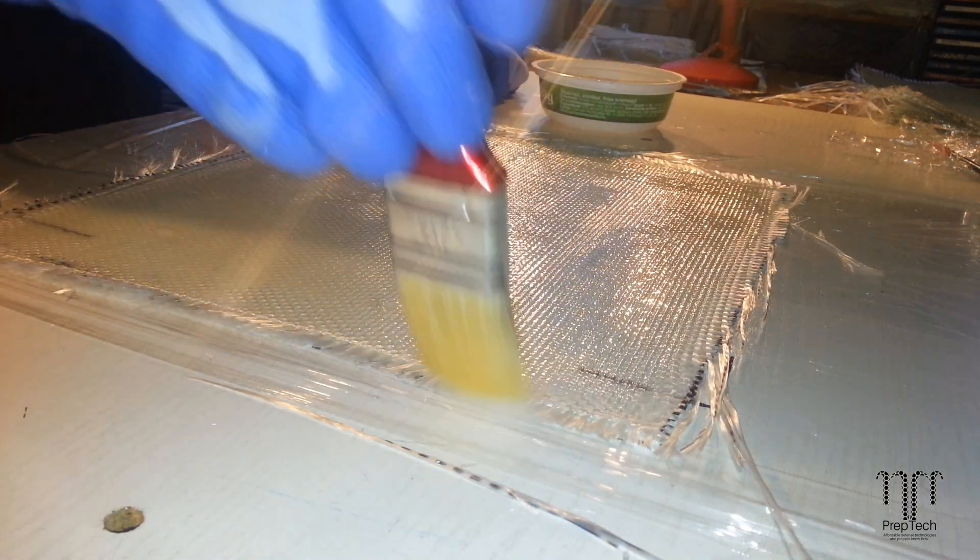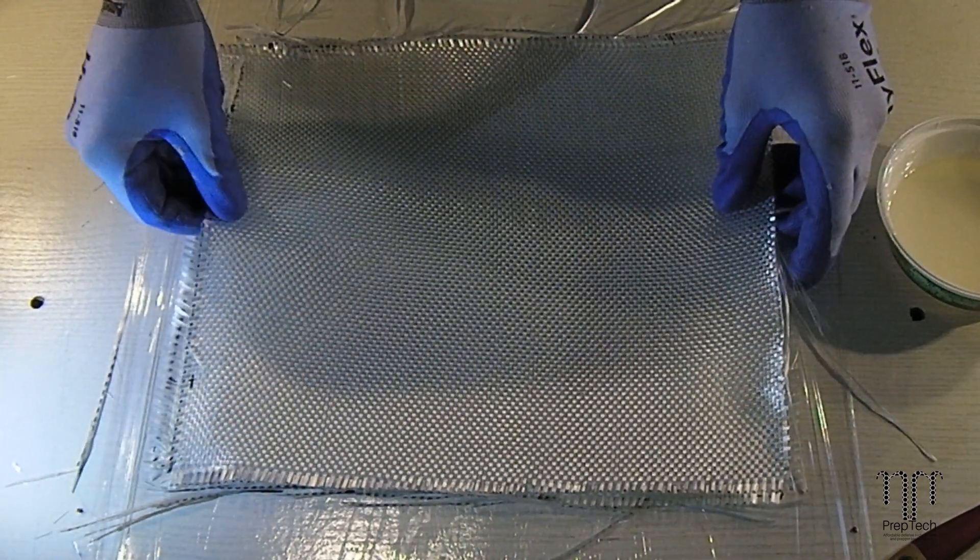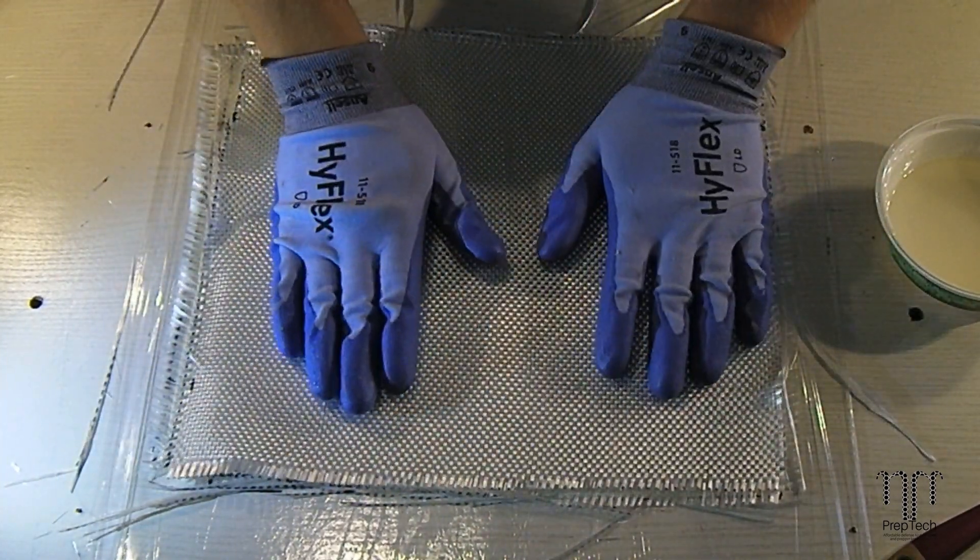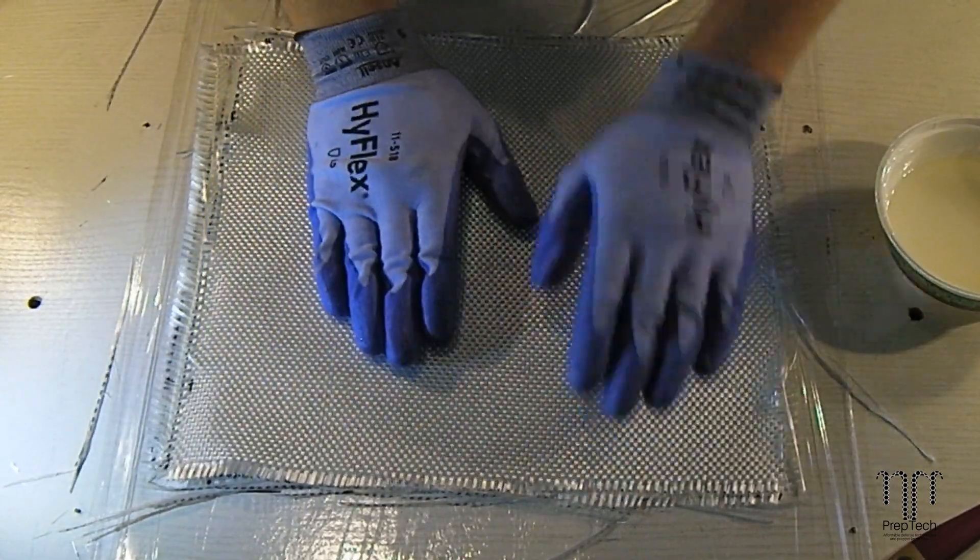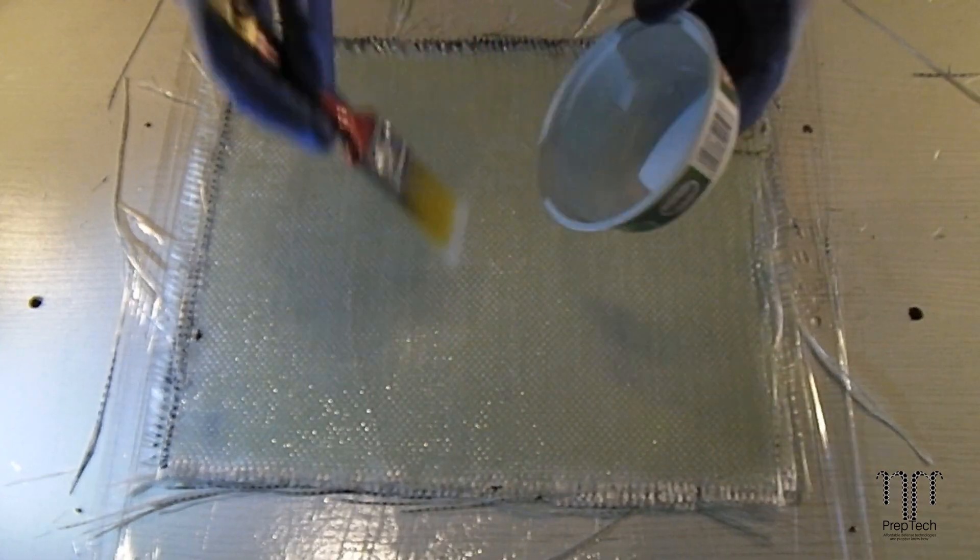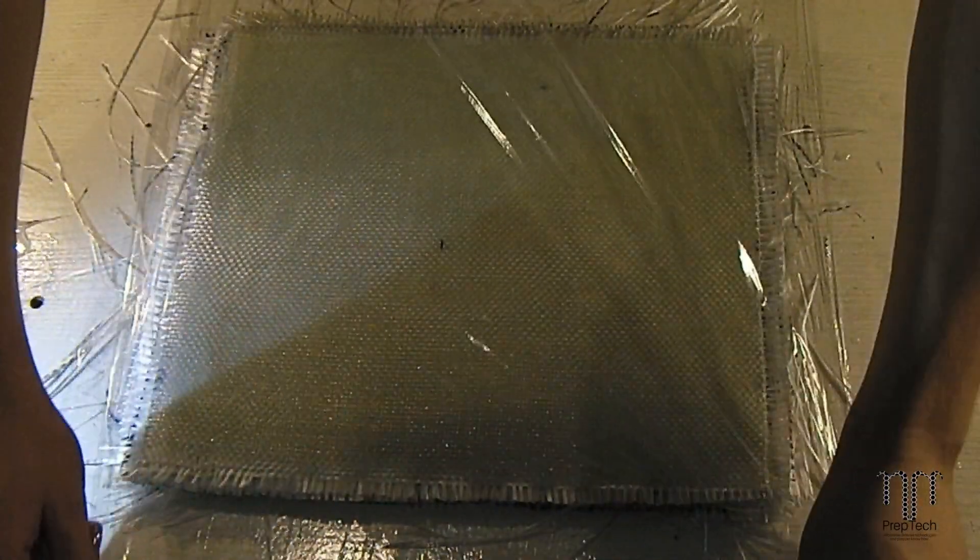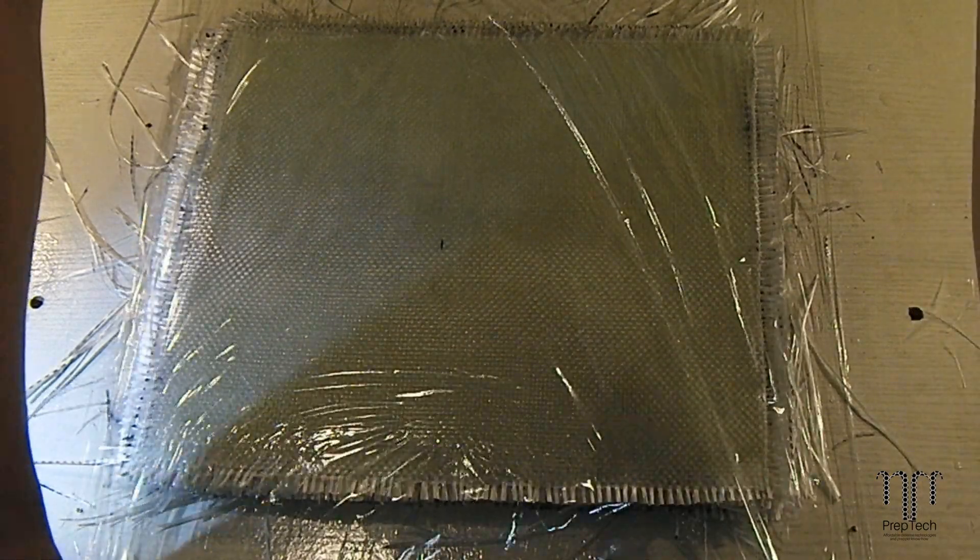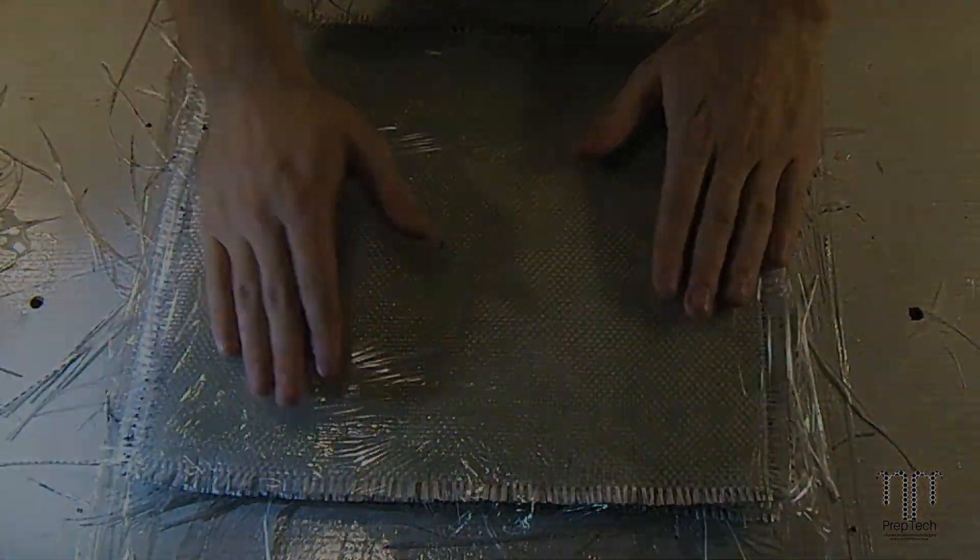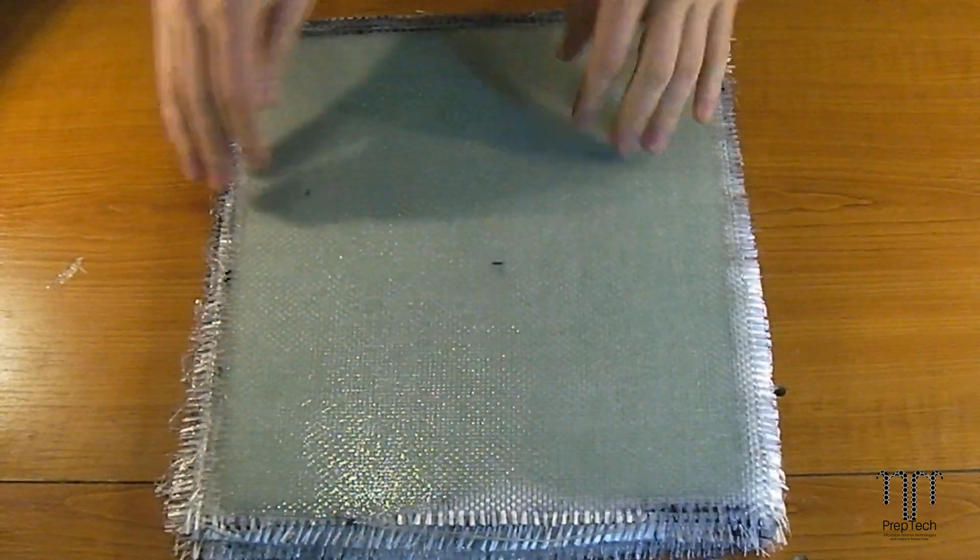The specific type I used has a pot life of half an hour, which means the time it takes to start forming the chemical bonds after you mix the two parts. It also means I had to work fast. I used small quantities at once and it took me nearly two hours to finish all 48 layers. I covered both the bottom and the top with a thin plastic wrap to prevent sticking to the press.